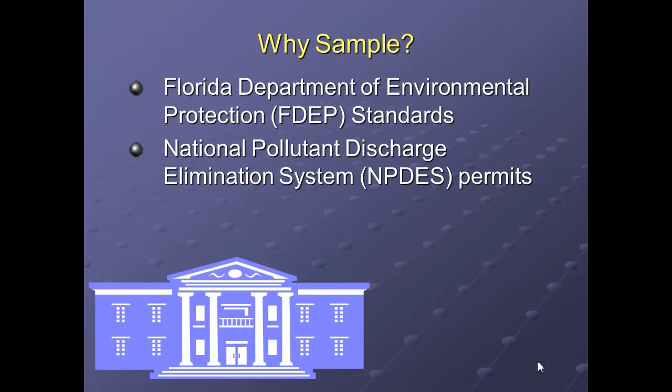One thing you get from a point source discharge is a National Pollutant Discharge Elimination System permit — that's an NPDES permit. This slide was originally created for Florida, so you'll see Florida DEP standards, but you can substitute your state's standards. These are reasons why you have to sample — to make sure you're meeting permit criteria before water is discharged to its final destination.